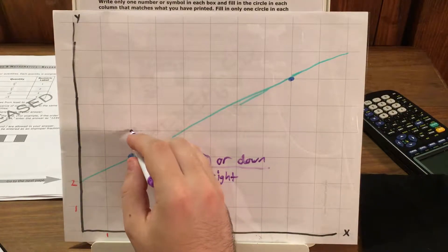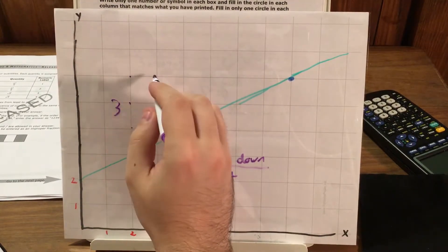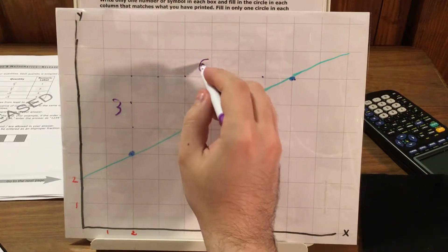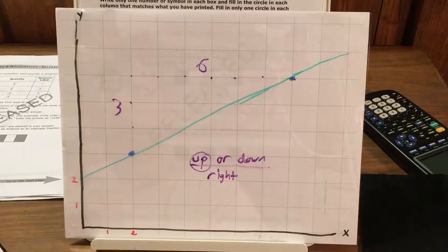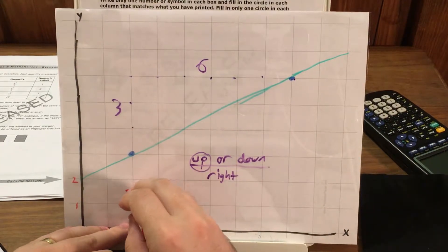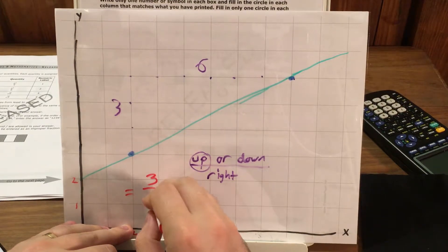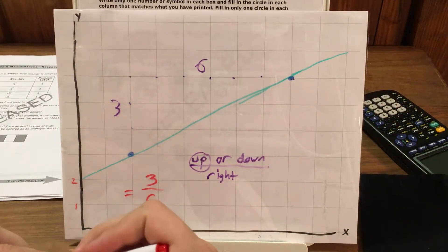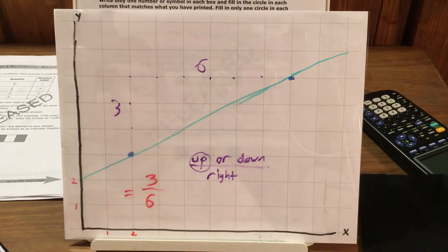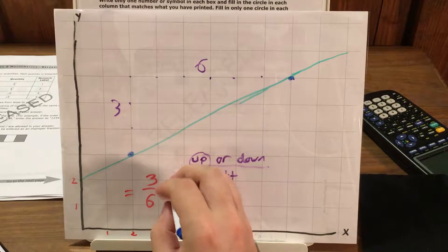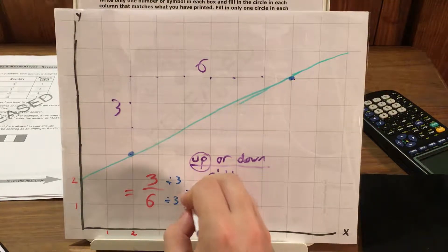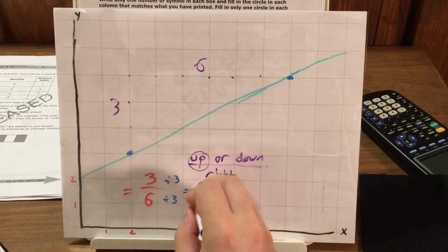So I'm looking for how many squares up I'm going as I go right. And I can count up 1, 2, 3 up, and then 1, 2, 3, 4, 5, 6 right. Which means if I want to write my slope as a fraction, it's going to be 3 up for 6 right. And they will be expecting you to simplify this, and I'll show you how this can work on the graph as well. So if I simplify 3 over 6, I can divide by 3 on both sides and just get 1 half.